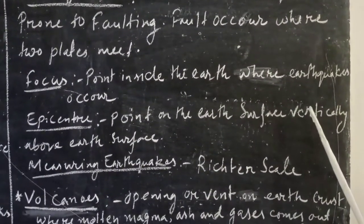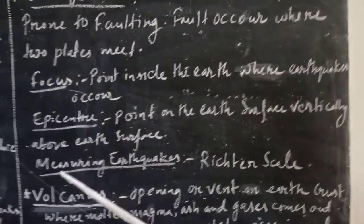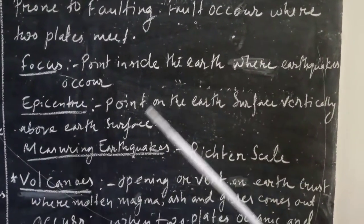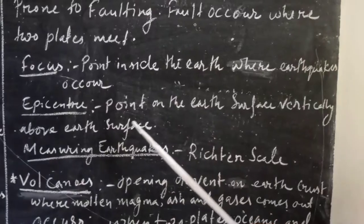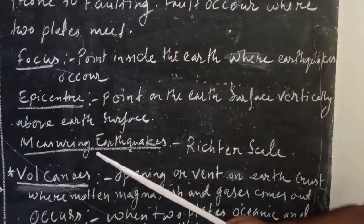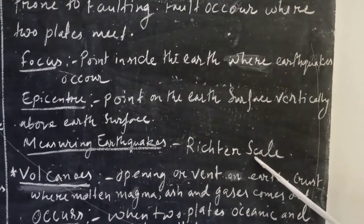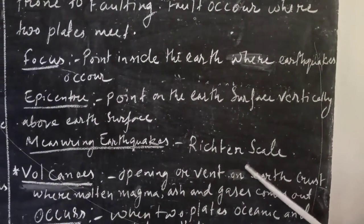Now let us look at focus. What is focus? Point inside the Earth where earthquake occurs is called focus. And the point on the Earth's surface vertically above the focus is called epicenter. What are the instruments used to measure earthquake? That is, Richter scale is used to measure earthquake.